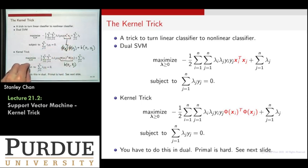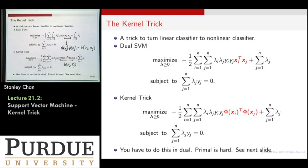The reason is simple: obtaining the nonlinear transformation can be very difficult, but since ultimately what you care about is the inner product, you can just define the kernel right away. Once you have the kernel, you replace the inner product with it, solve the new dual SVM problem using the kernel instead of the inner product, and get solutions for lambda i and lambda j for that kernel setting. After obtaining those dual variables, you go back to the primal problem to get the primal variable and the decision boundary.